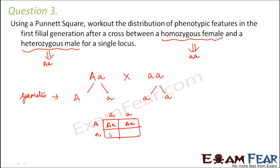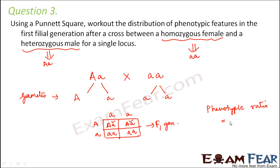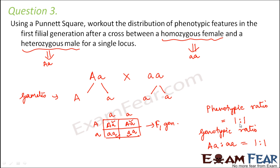Now let us find out the combinations. From this table we can find out the phenotypic and genotypic ratio for the F1 generation. The phenotypic ratio is going to be 1:1, as they have the same phenotype. Similarly, the genotypic ratio between AA and Aa is also going to be 1:1. So in this case, the phenotypic ratio and the genotypic ratio are the same for the F1 generation.